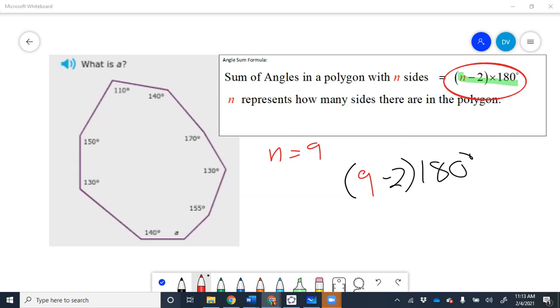So, this 9 minus 2 is going to be 7, isn't it? So, what's 7 times 180? Use your calculator. Use your phone. What did you get for that? That's right. That's good. That's what I got, yeah. Equals 1260 degrees.